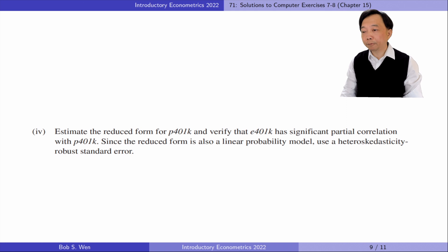In part 4, we estimate the reduced form for P401k and verify that E401k has a significant partial correlation with P401k. Since the reduced form is also a linear probability model, we use a heteroscedasticity robust standard error.